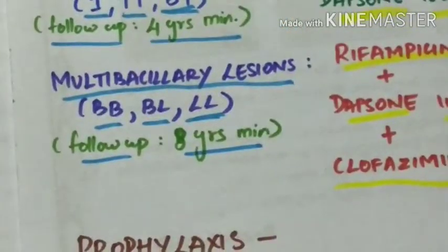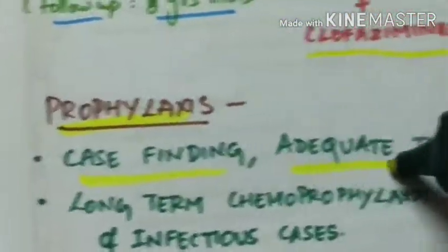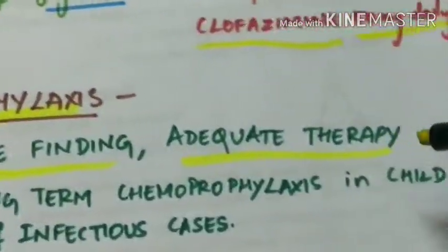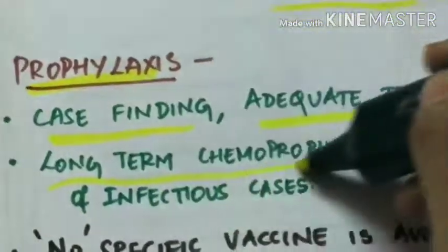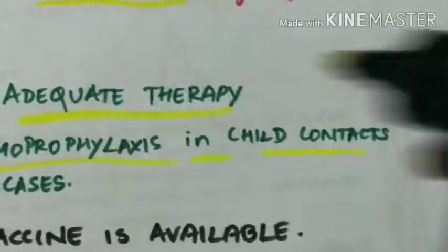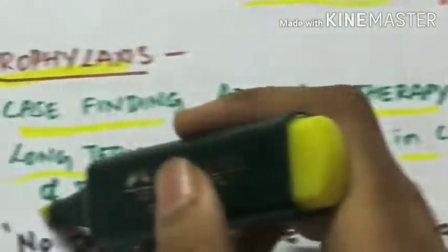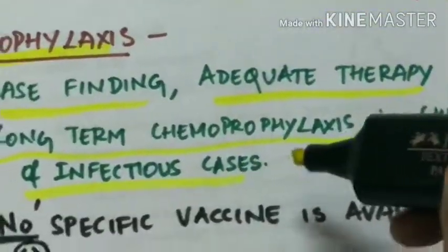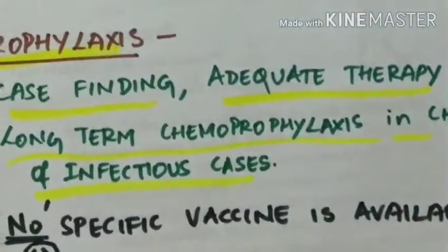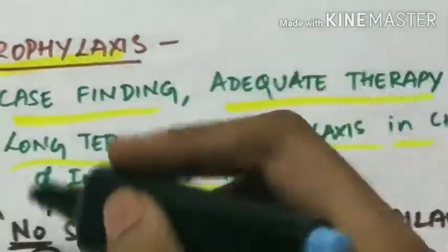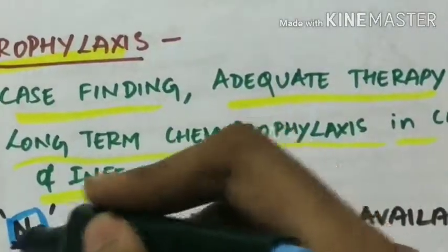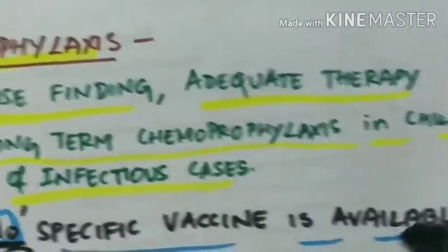Prophylaxis includes case finding and adequate therapy. Long-term chemoprophylaxis is done in children who are in contact with infectious cases. There is no specific vaccine available.